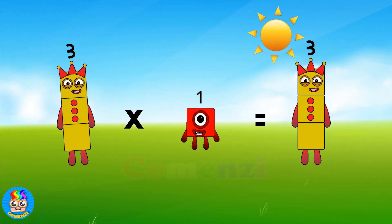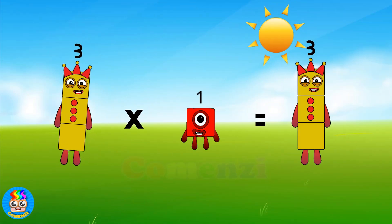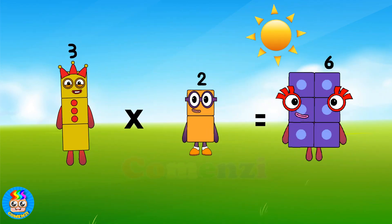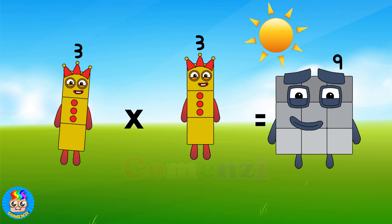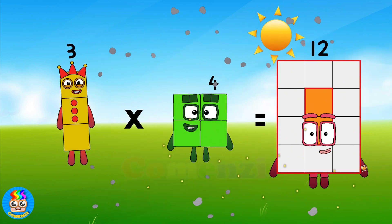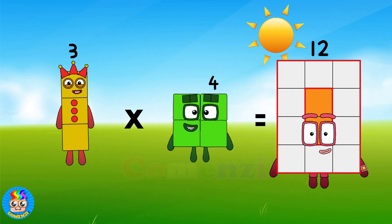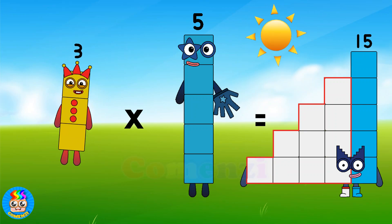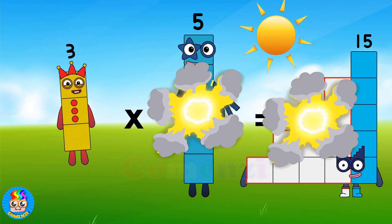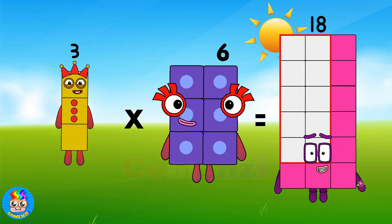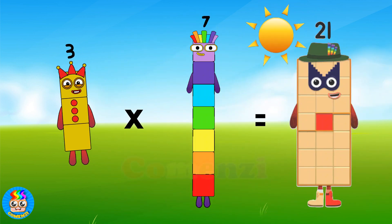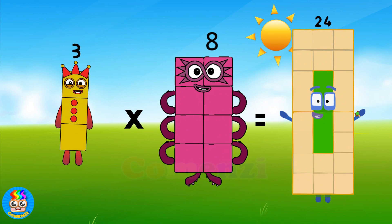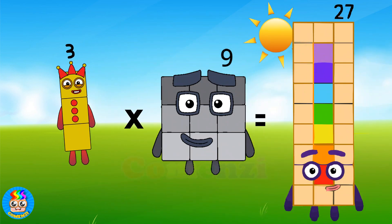Three times one is three. Three times two is six. Three times three is nine. Three times four is twelve. Three times five is fifteen. Three times six is eighteen. Three times seven is twenty-one. Three times eight is twenty-four. Three times nine is twenty-seven.